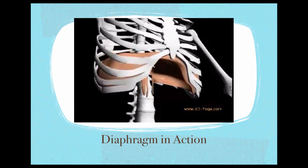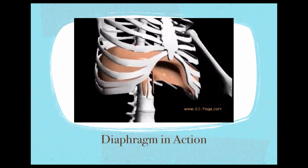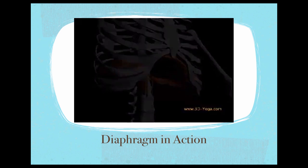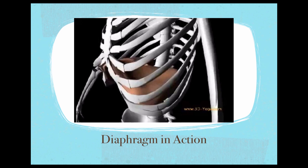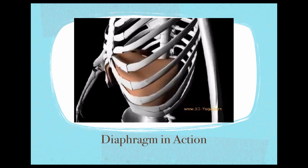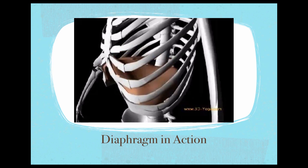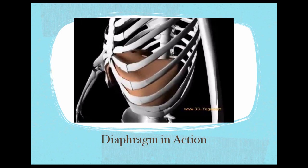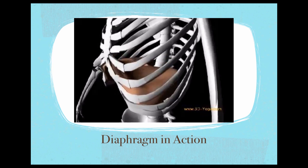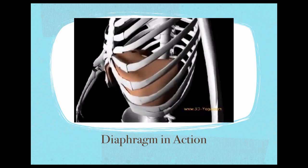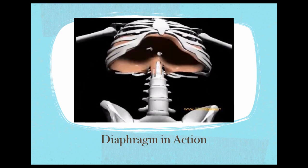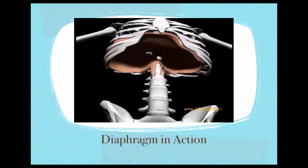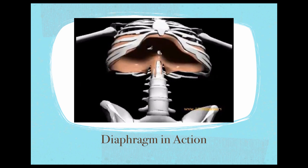The diaphragm attaches at the costals along the lower ribcage, high in the front of the sternum, and deeply in the back along the spine. It also attaches to itself via a central tendon, making it one of the unique muscles of the body. The diaphragm uses its central tendon and its attachments as leverage to flatten during inhalation. The expansion of the ribs comes from the resistance of the internal organs to downward movement — as the internal organs are slow to move, the ribs expand to make room for the lungs.